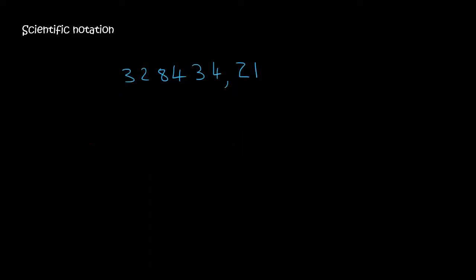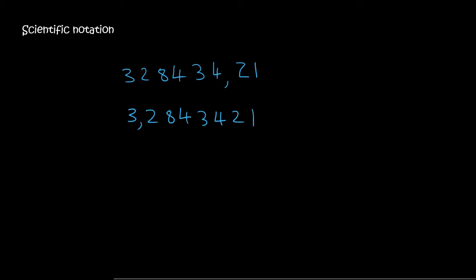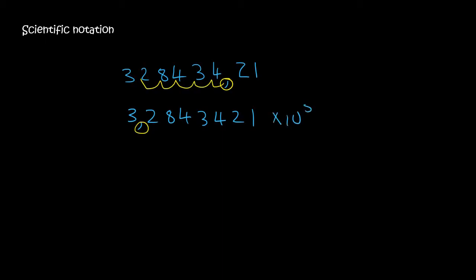If possible, pause this video and try this question quickly. So this one would be 3, and then it's always a comma after the first one: 2, 8, 4, 3, 4, 2, 1. Then you look at the decimal place — it was here, now it's here. So that is 1, 2, 3, 4, 5 places. So you say times 10 to the 5.